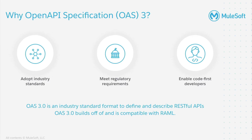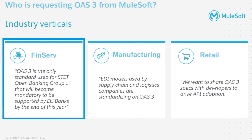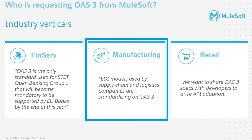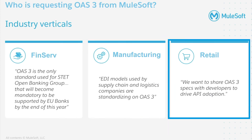Finally, supporting OAS 3 will better enable code-first developers to take advantage of all the benefits Anypoint platform has to offer. Looking at the FinServ industry, the Open Banking Group in the European Union has standardized on OAS 3 as the API specification language. Financial industry standards like Swift for payments also recommend using OAS 3. Similarly in manufacturing, EDI models used by healthcare, supply chains, and logistics companies are standardizing on OAS 3. We have heard from retail supply chain firms that their business units have standardized on OAS 3, and they are interested in unifying and cataloguing all their APIs into a single portal, resulting in discoverability, reuse, and standardization.